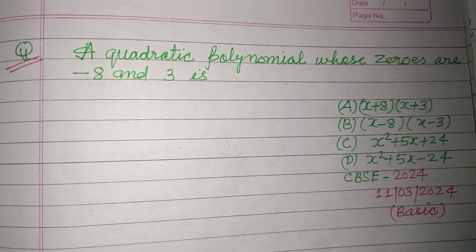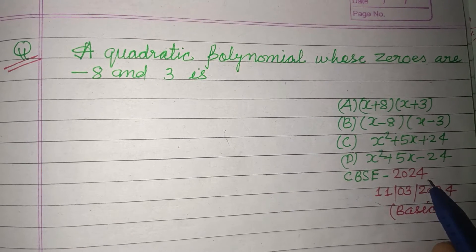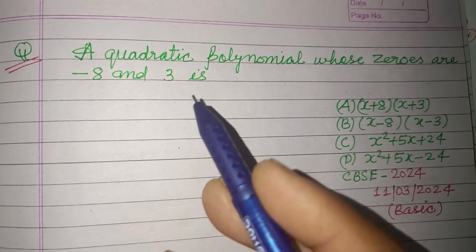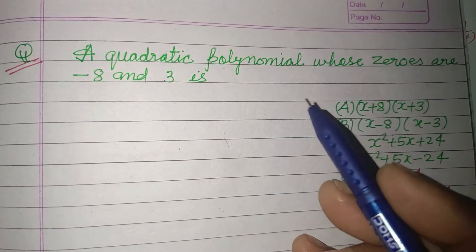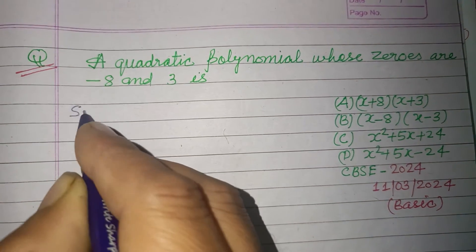Hello viewers, warm welcome to this YouTube channel. This is a question from CBSE Board Exam 2024: A quadratic polynomial whose zeros are -8 and 3 respectively.